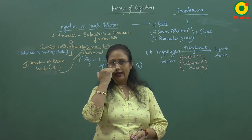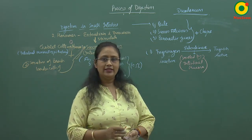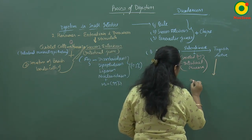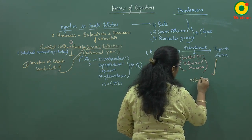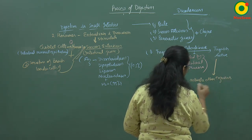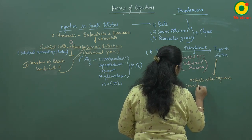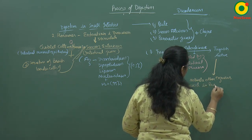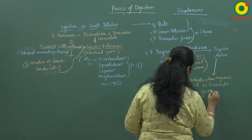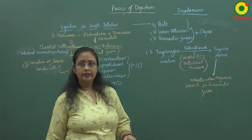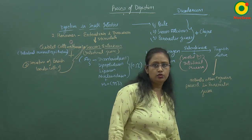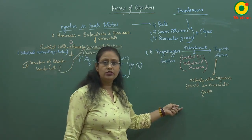Once trypsin becomes active, it will activate other enzymes present in the pancreatic juice.